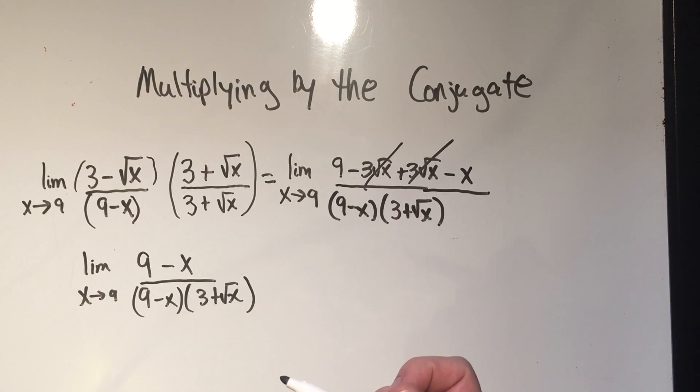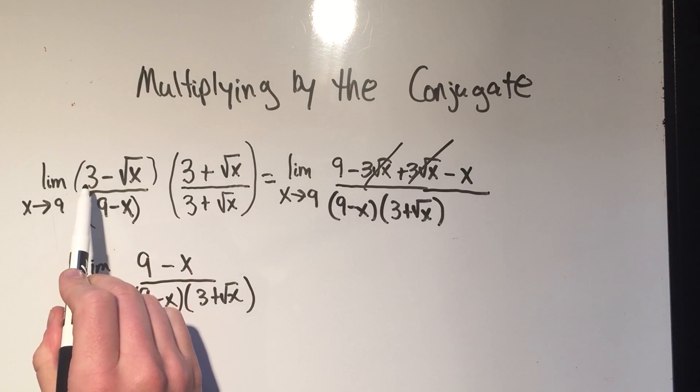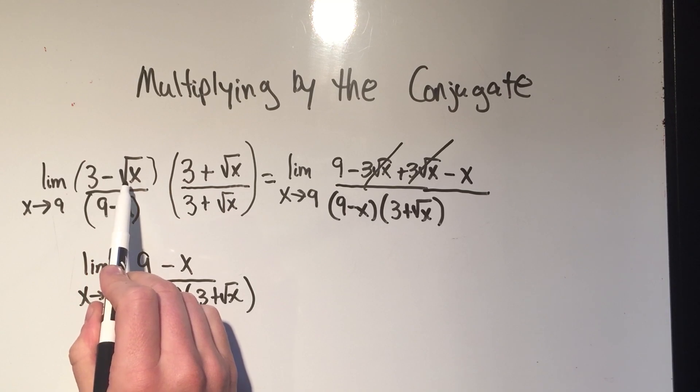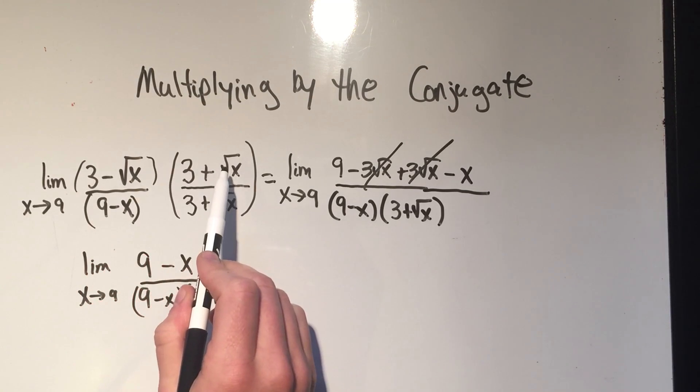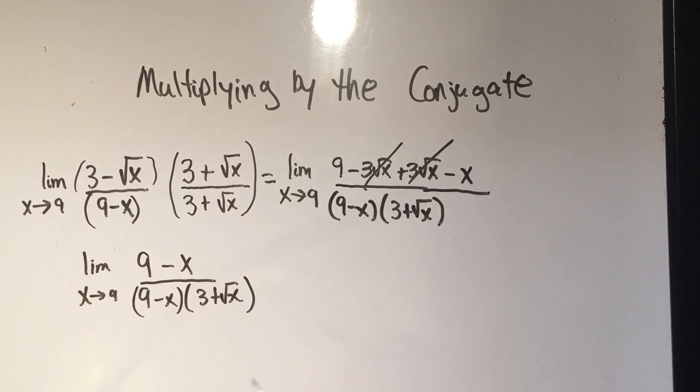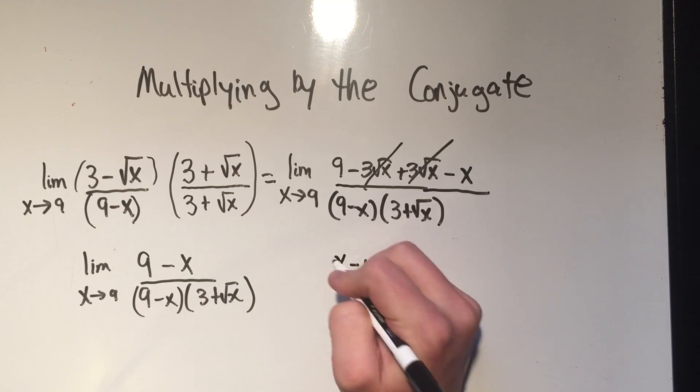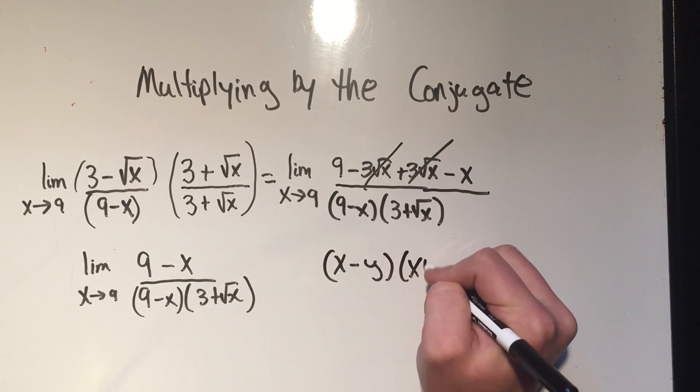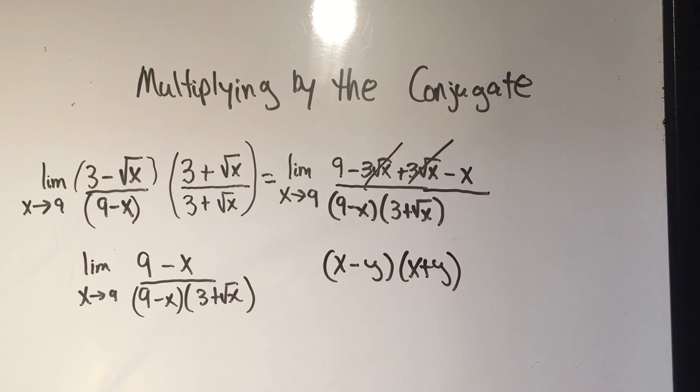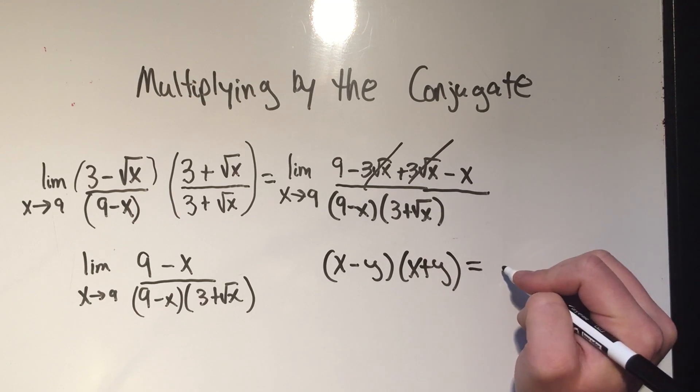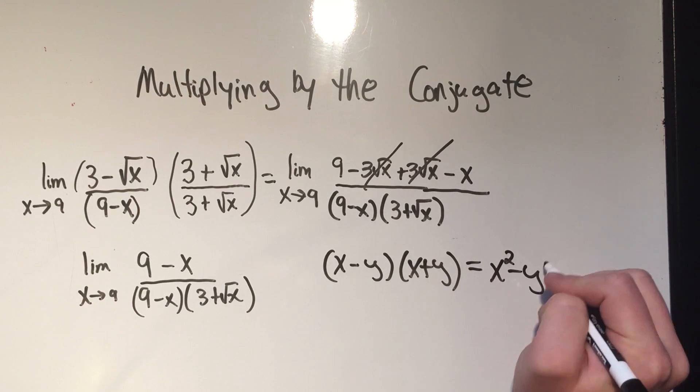Well, you'll notice this. 3 minus something times 3 plus something, or when I multiply something by its conjugate, that's what we call a difference of squares in algebra. The difference of squares equation looked like this, and it yielded the result x squared minus y squared.